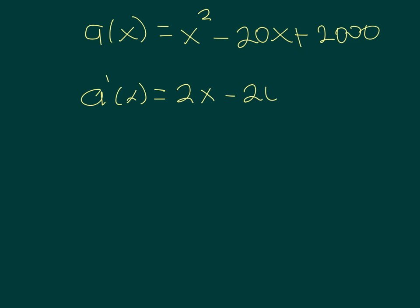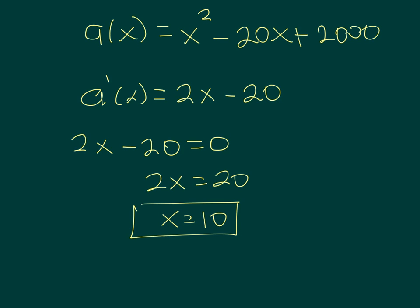Once we have our function, we have to find out the derivative of that function. The function was a of x equals x² minus 20x plus 20,000. And the derivative of that function is going to be 2x minus 20. Equating the derivative to 0, 2x minus 20 equals 0, and solving for x, we will have that x equals 10. So, 10 units will be the number of units that we minimize our average cost.